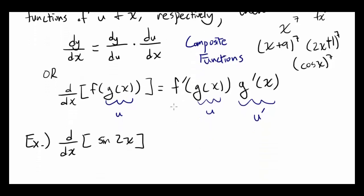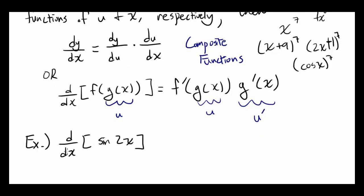Let me show you what that means. In this case: derivative with respect to x of sine of 2x. Here, 2x is u because it's the inner function — the function within a function. So what's going to be the derivative of this? It's not going to be cosine of 2x.